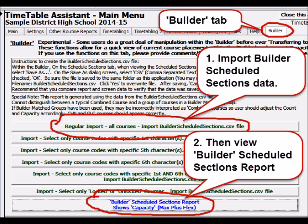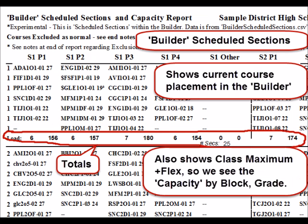New this year is the ability to import the builder scheduled sections data and view it similar to the master schedule reports. This shows current course placement within the builder and also the course max plus flex, which means we see the capacity by grade and block. This is very helpful for those who do a lot of manipulating within the builder before transferring to master.